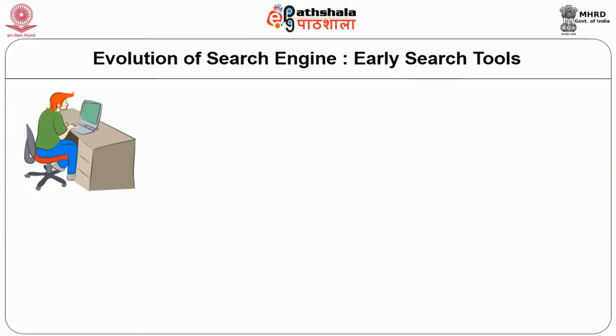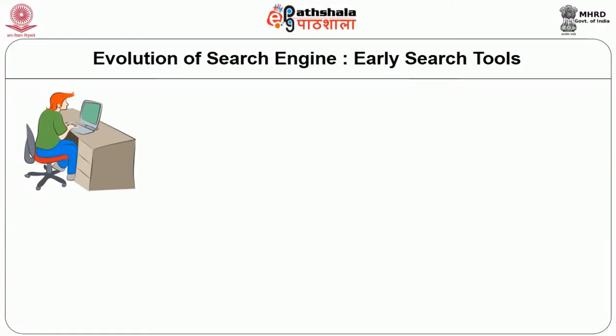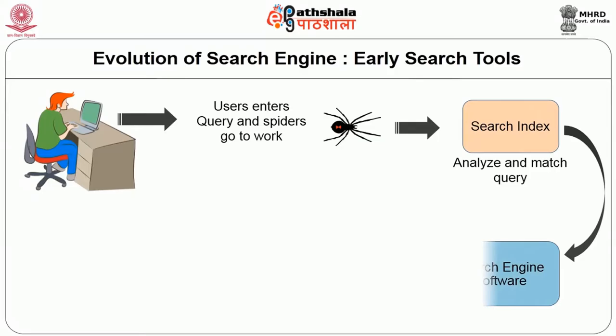Search engines do not actually search the worldwide web directly. Instead, they search their own databases consisting of keywords and full text of web pages that were earlier selected and picked up from billions of web pages residing on servers all over the world. When a user searches the web using a search engine, it always searches an old copy of the real web page residing on the search engine's server. When a user clicks a link in the results, they are directed to the current version of that web page.